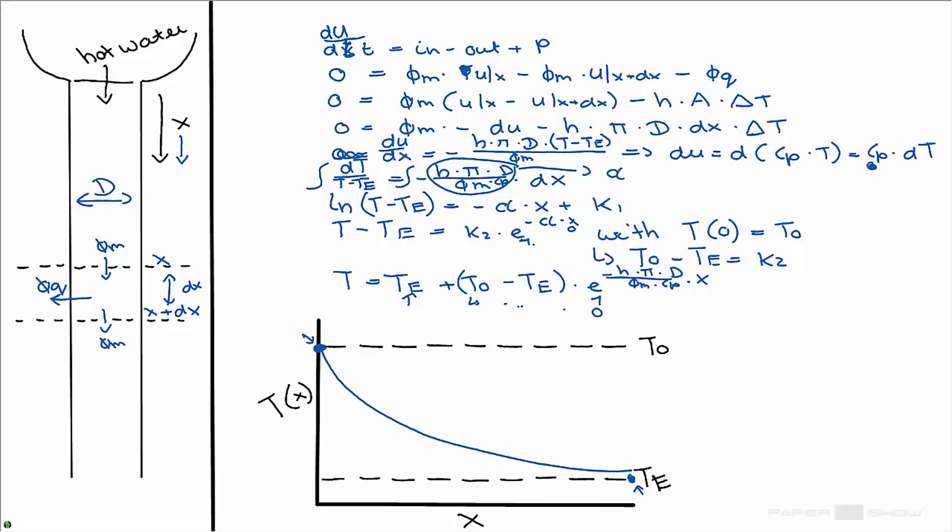Then the last question was to fill in some numbers and find the correct temperature. Well, if you have found this equation, you can just fill in all the numbers except for the x and you should find that the answer is 76 meters. I thank you for watching and if you have any questions please feel free to ask them on the forum.